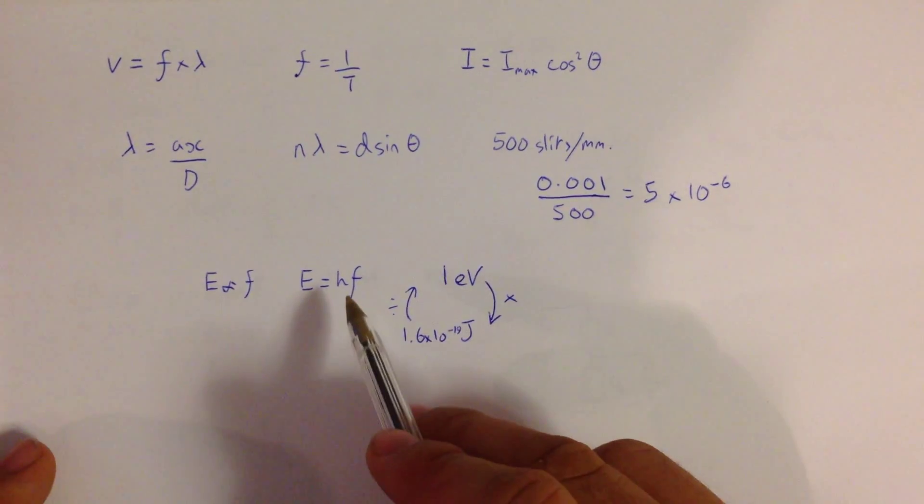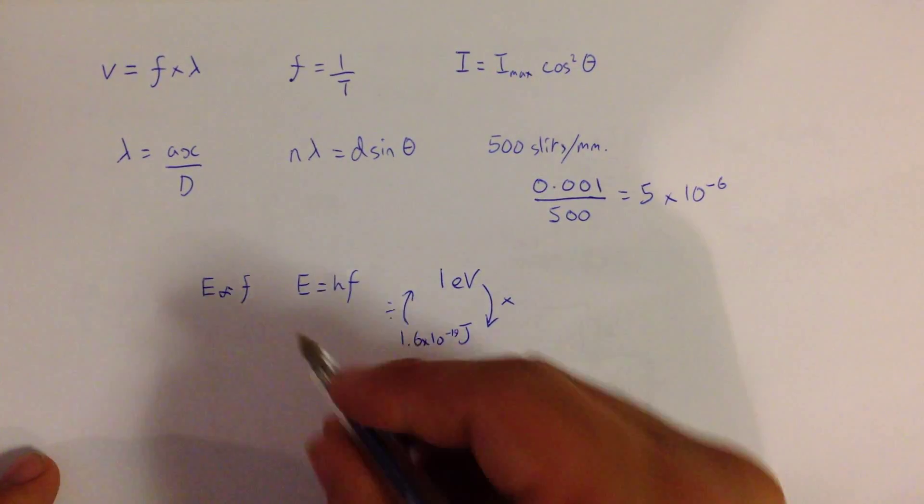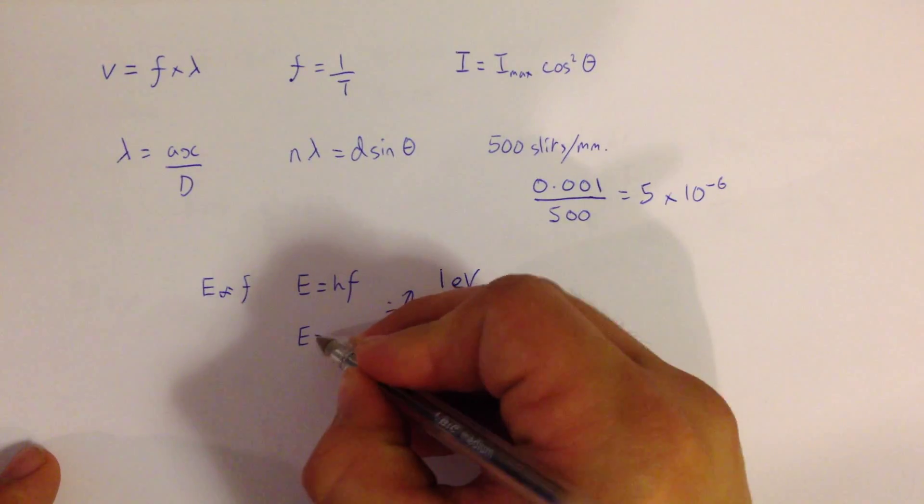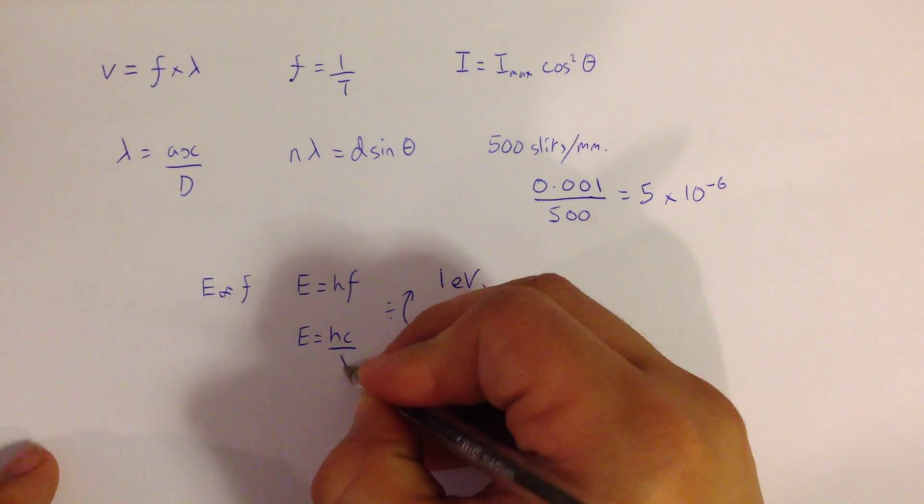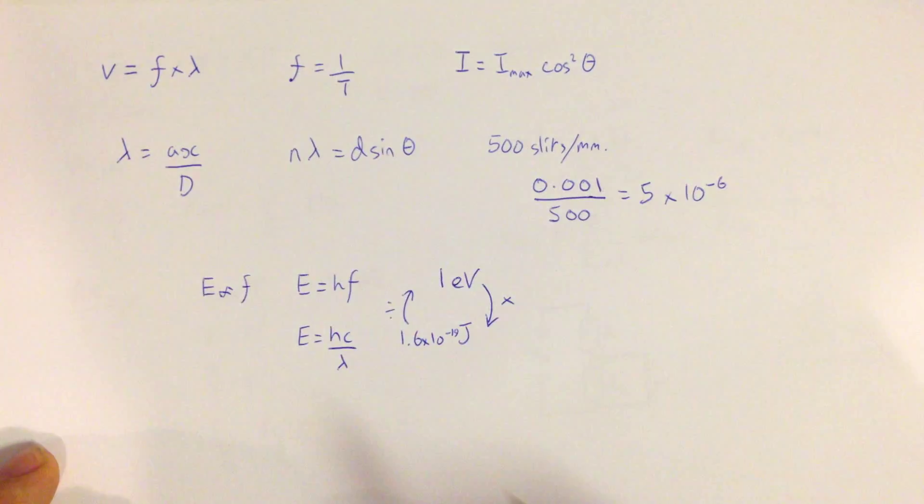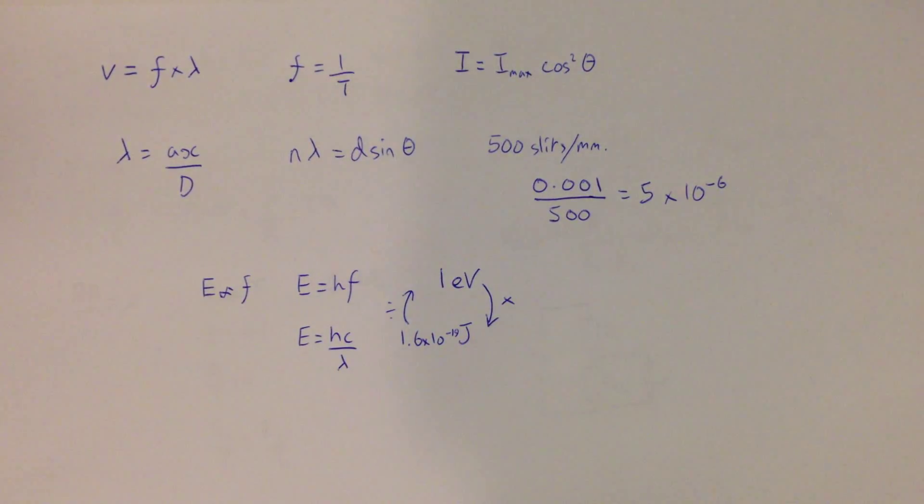We can then substitute in the wave speed equation into this to give us that energy is equal to HC over lambda, where C is the speed of light, because we're talking about electromagnetic waves when we're using this equation.